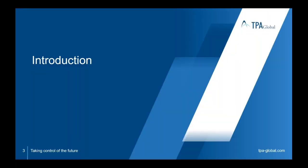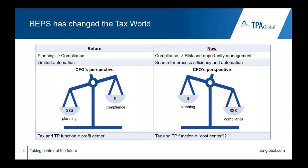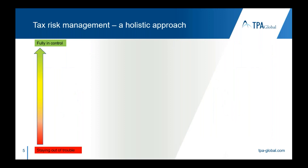On slide three and four, what was the basis for the current way of thinking around value chain analysis? We used to know the qualitative side of value chain analysis, and through BEPS we got more emphasis on the quantitative side. This is because there is more scrutiny on transfer pricing, and BEPS has evolved from a more contractual-driven environment to a more substance-driven environment.